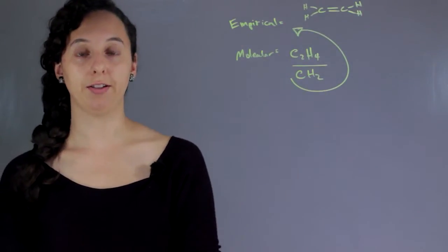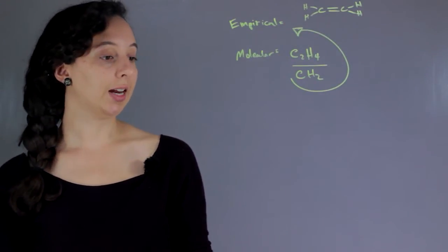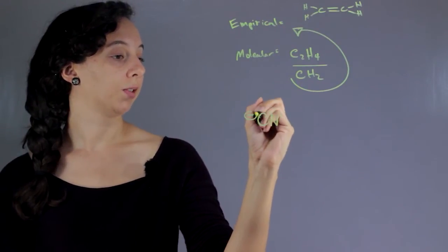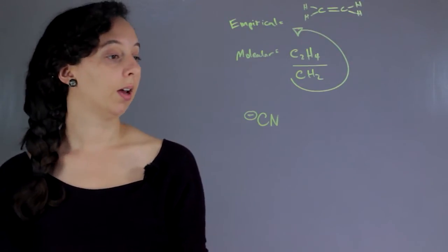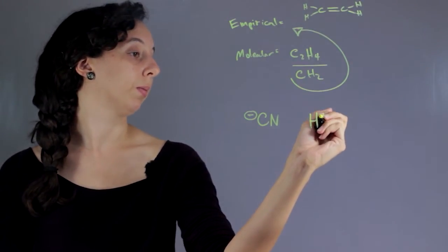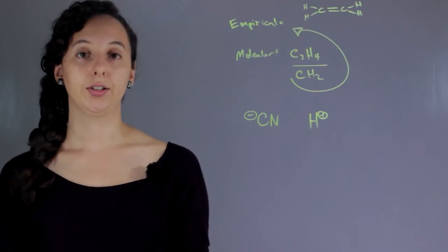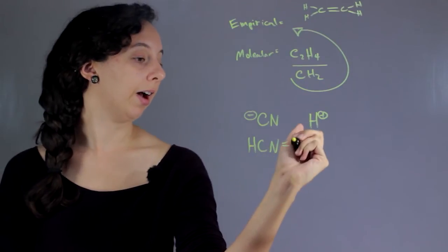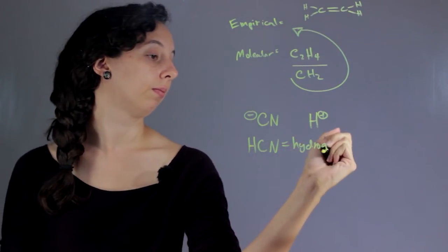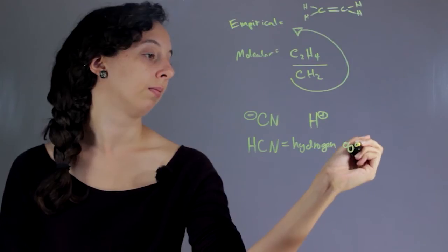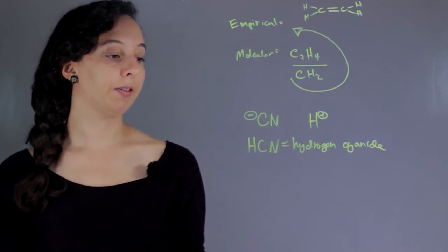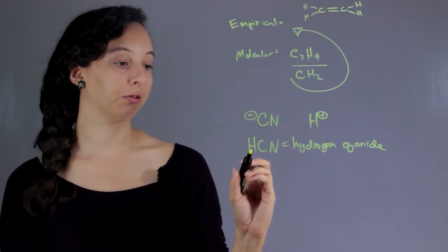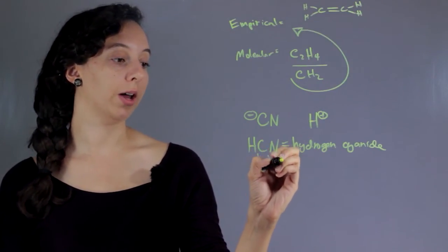Cyanide is a common ion — that's one carbon and one nitrogen. And hydrogen is just this atom. Put them together and you have hydrogen cyanide. In this case, the empirical formula is the same thing as the molecular formula, because you can't reduce one, one, and one — it's already reduced.